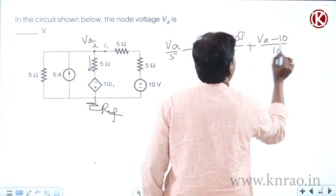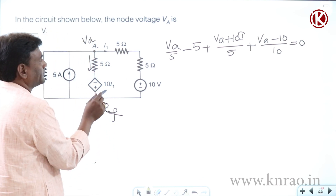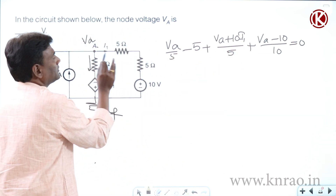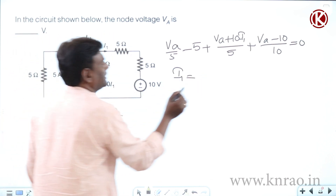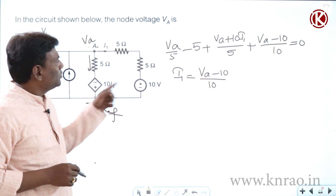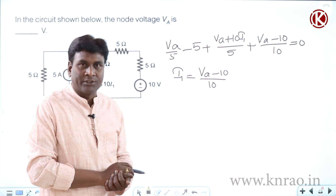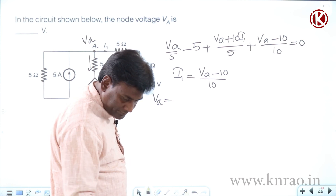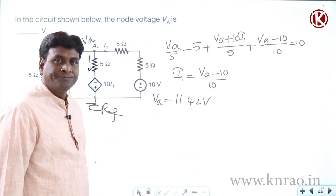Setting the sum equal to zero: VA plus 10 i1 divided by 5, plus VA minus 10 by 10 equals 0. Here i1 is the controlling variable, where i1 equals VA minus 10 by 10. Substituting i1 and solving for VA gives the answer: VA equals 11.42 volts.